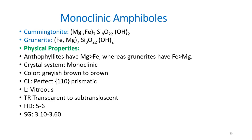Coming to the monoclinic amphiboles — the cummingtonite–grunerite series. Cummingtonite is represented by the formula of hydrated magnesium iron silicate, and grunerite is a hydrated iron magnesium silicate, with a different arrangement of ions. In terms of physical properties, cummingtonite has a high magnesium ratio — magnesium is greater in proportion compared to iron — whereas in grunerite, iron is more concentrated compared to magnesium. This is the key difference between the two minerals.